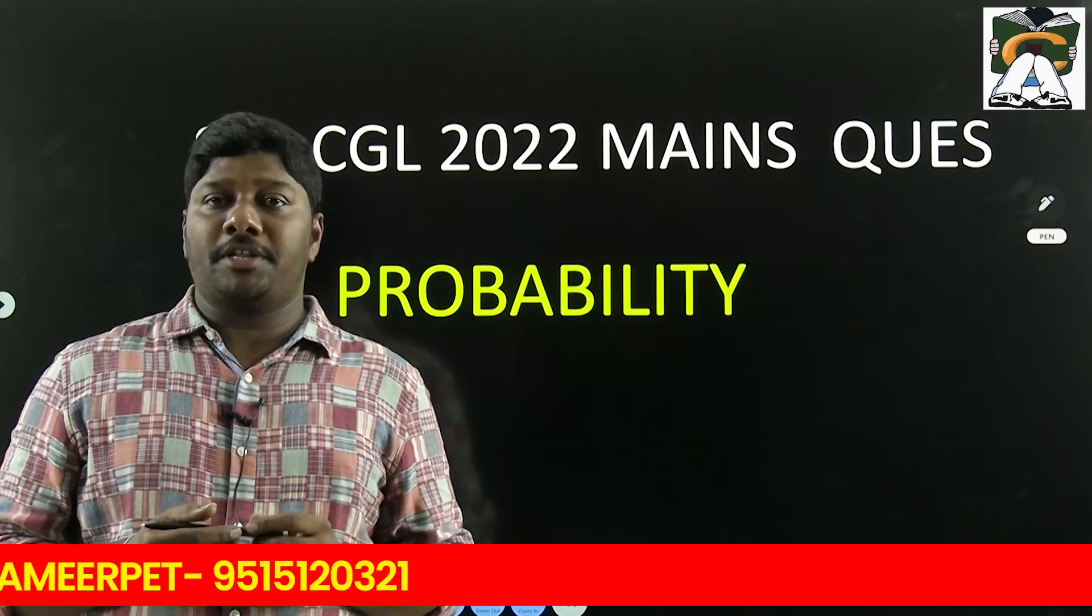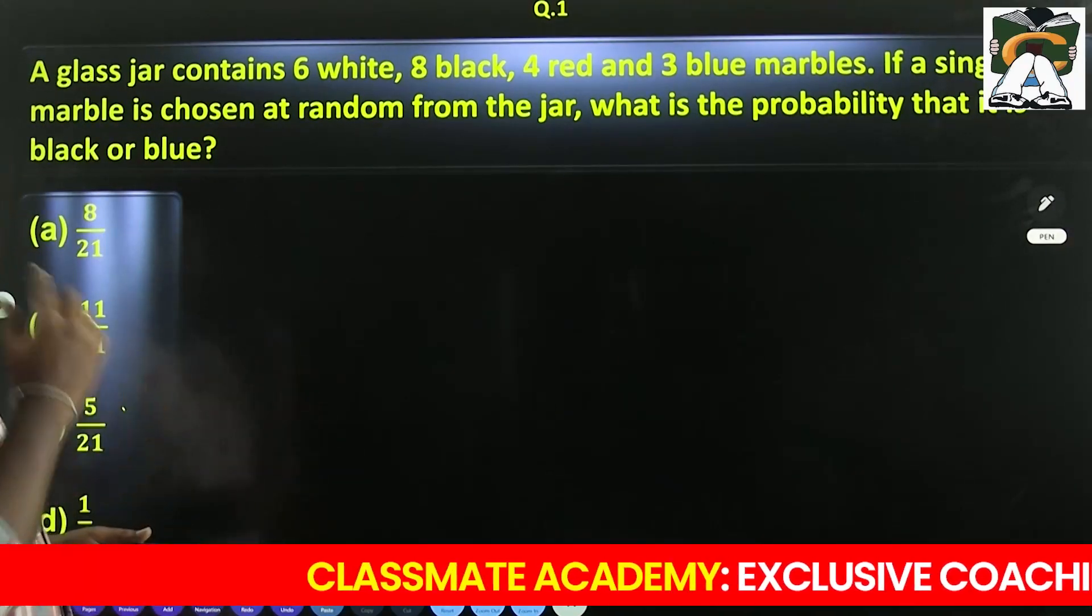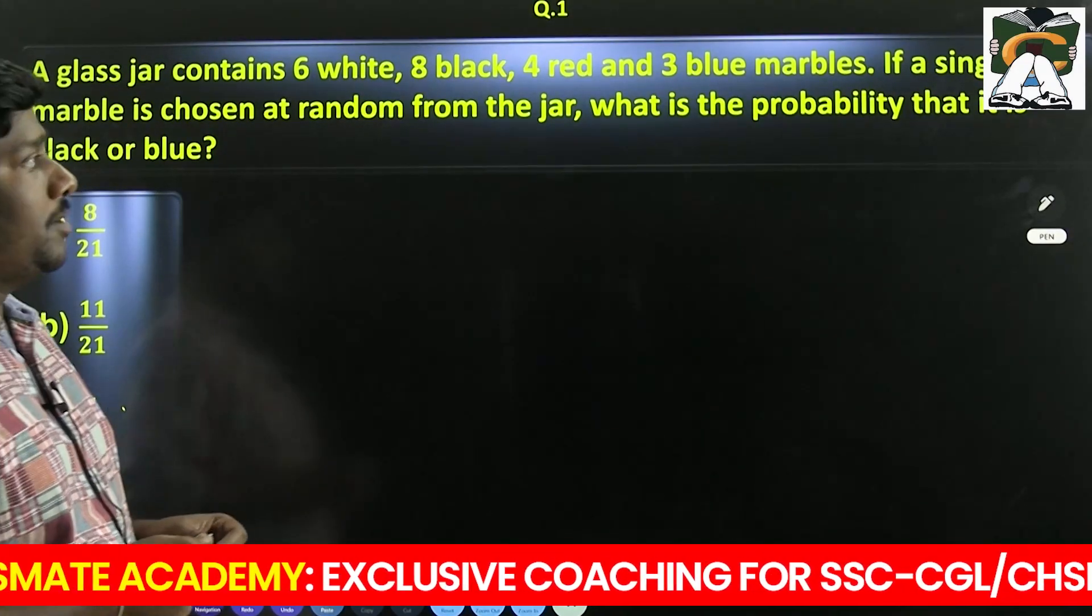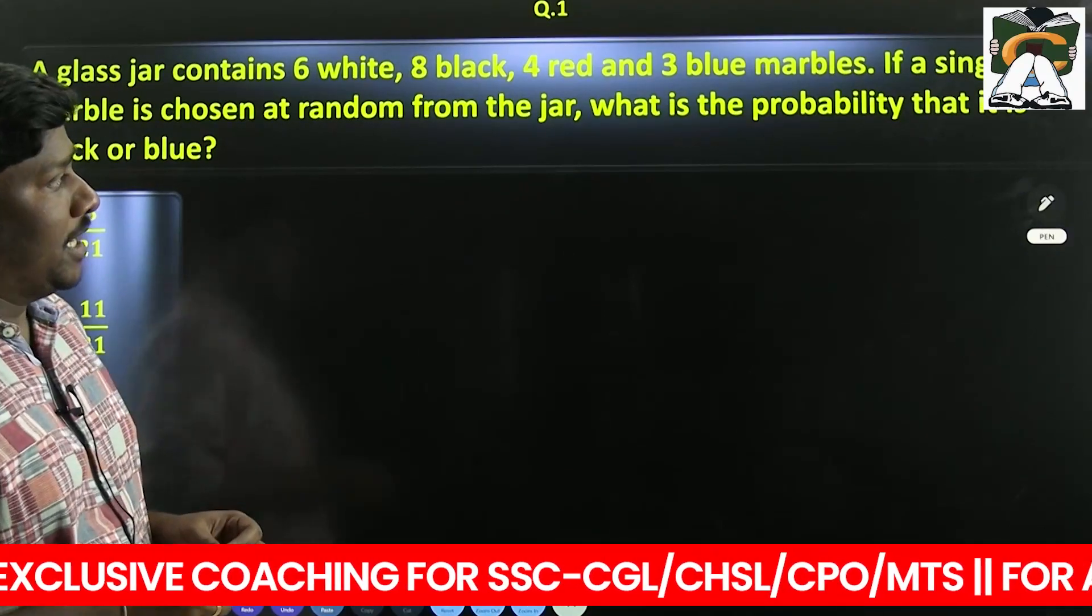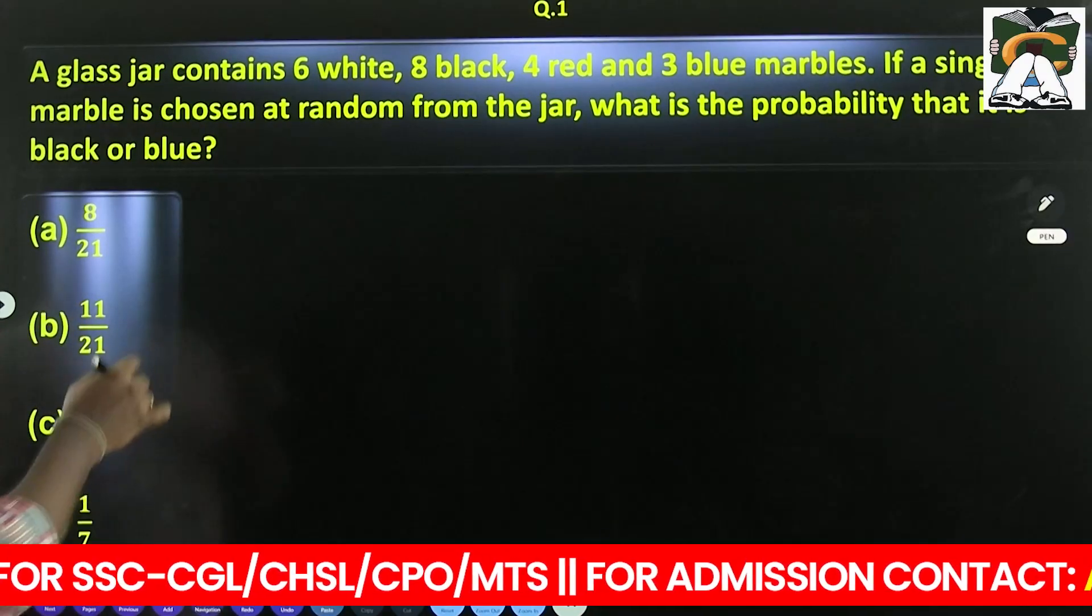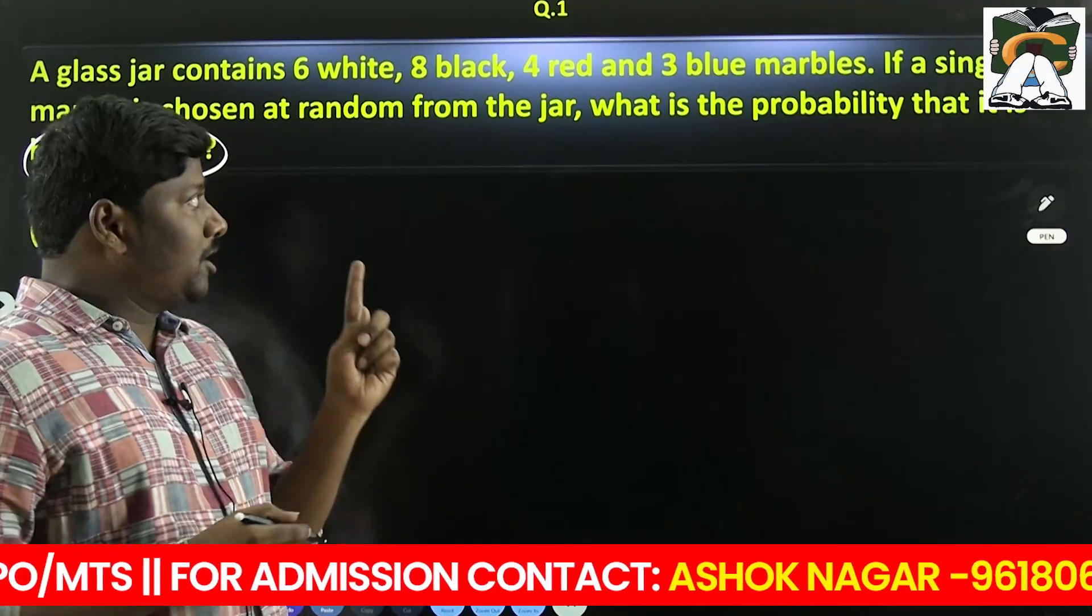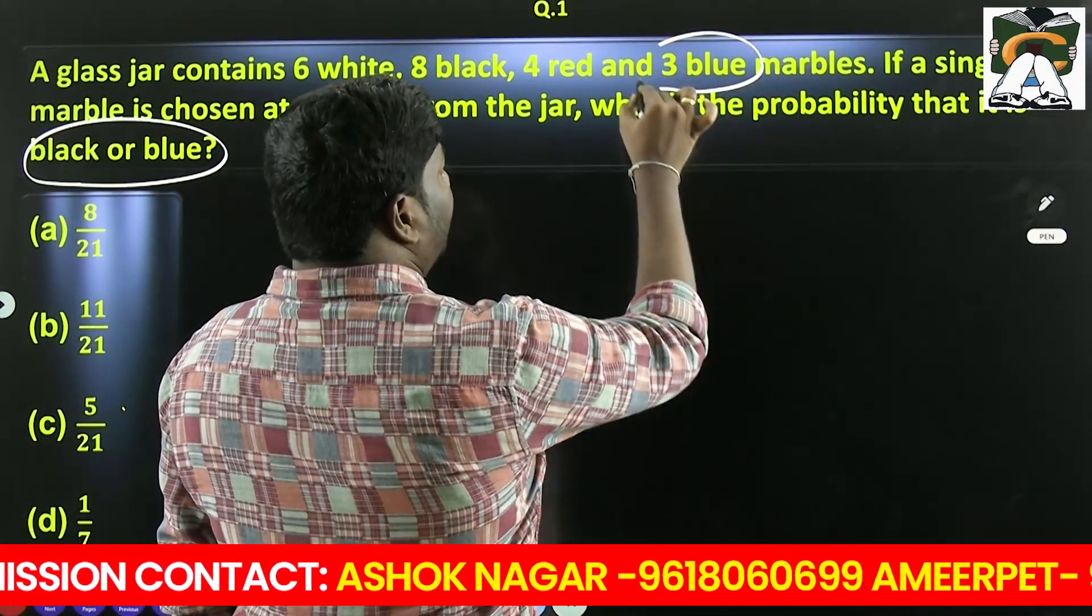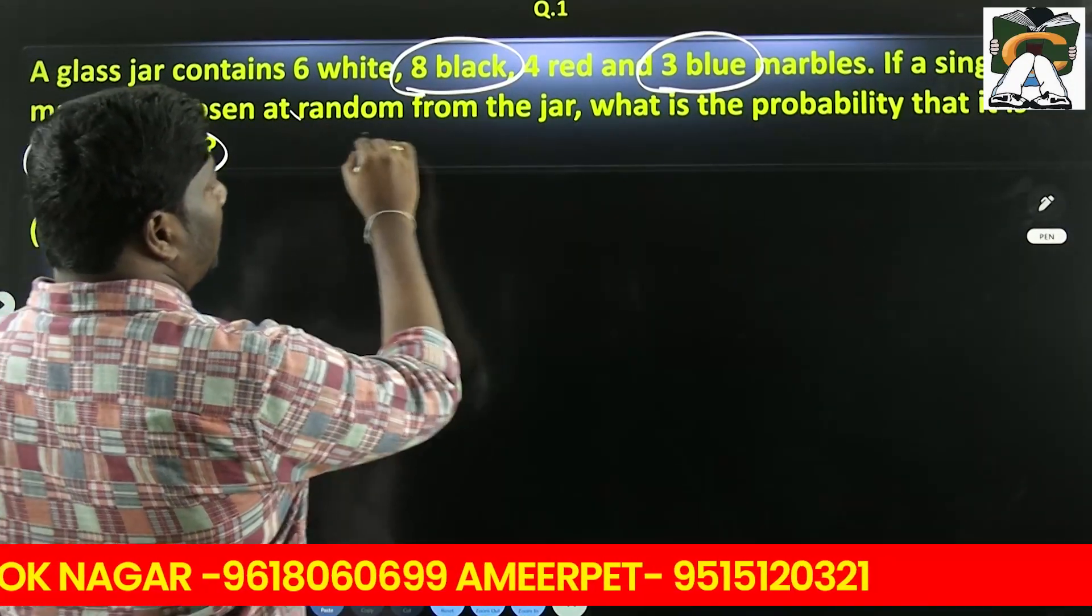So just look at the first question. A glass jar contains six white, eight black, four red and three blue marbles. If a single marble is chosen at random from the jar, what is the probability that it is black or blue? So black or blue?